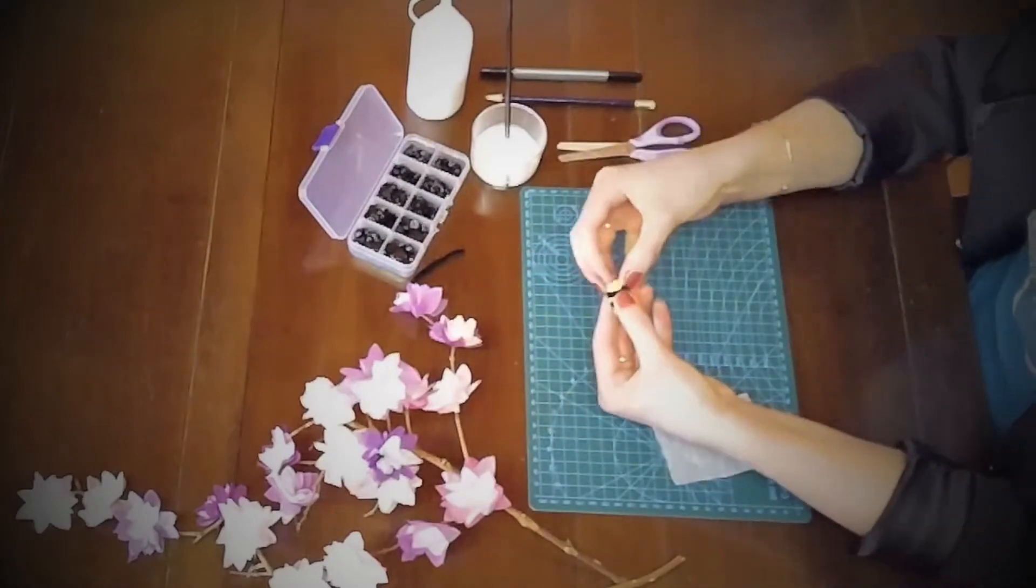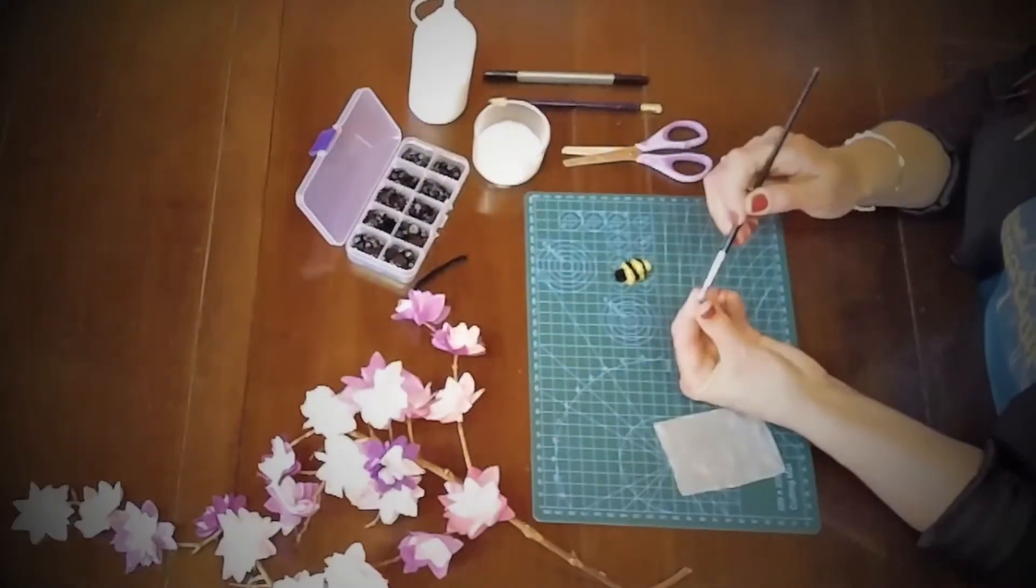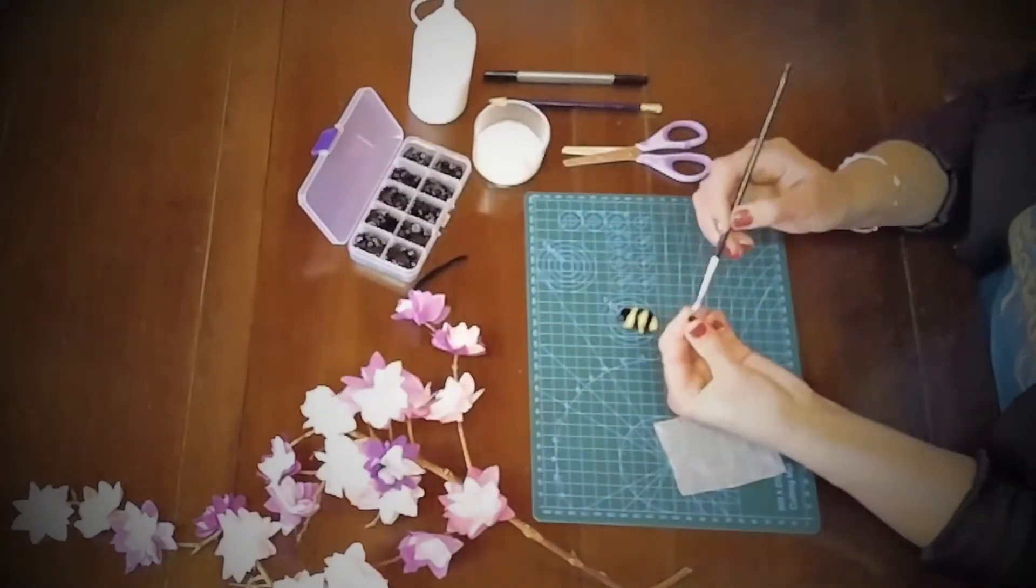Next we need to give our bees some eyes so take two black beads and glue them onto the black pom-pom head.